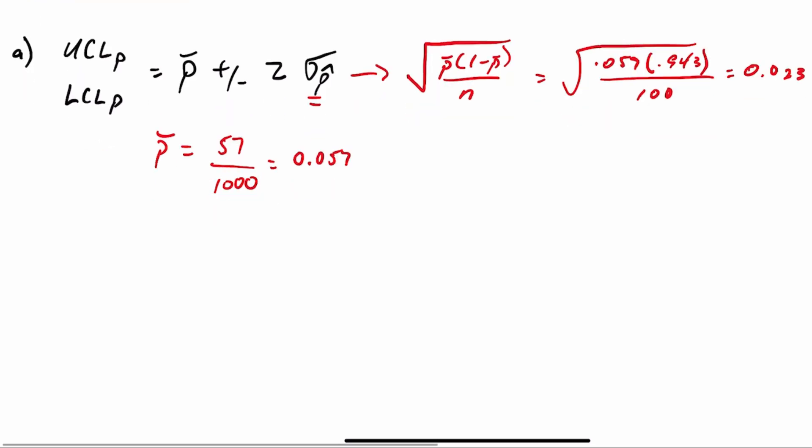Well, we can now determine the upper and lower control limits. So the upper control limit is equal to 0.057 plus 3, because we want 3 sigma quality, times 0.023. That will give us 0.126.